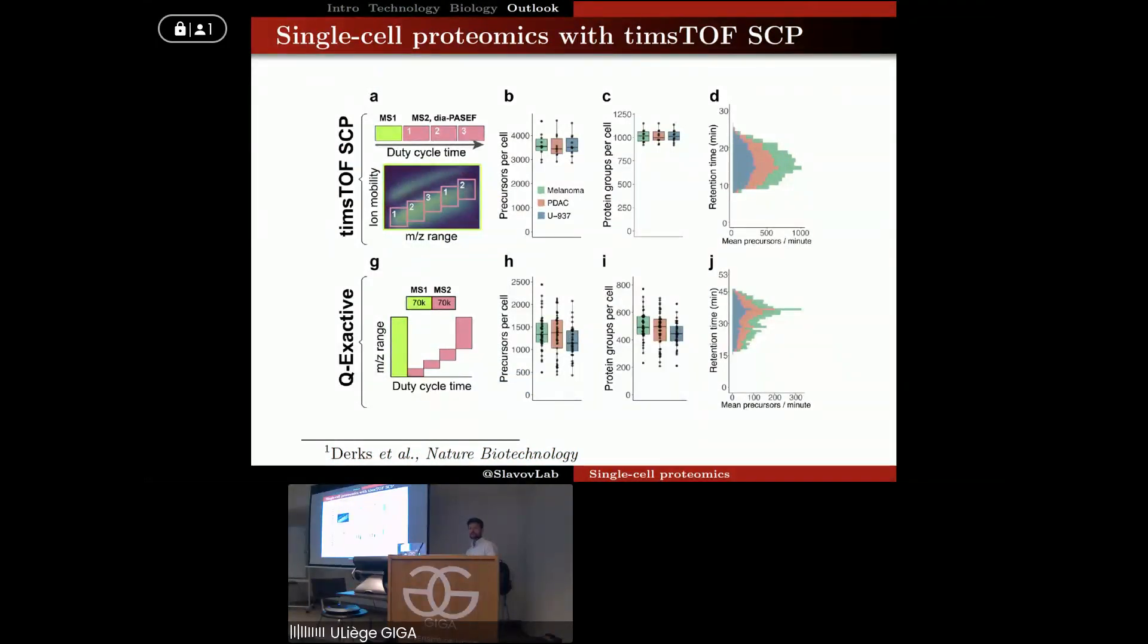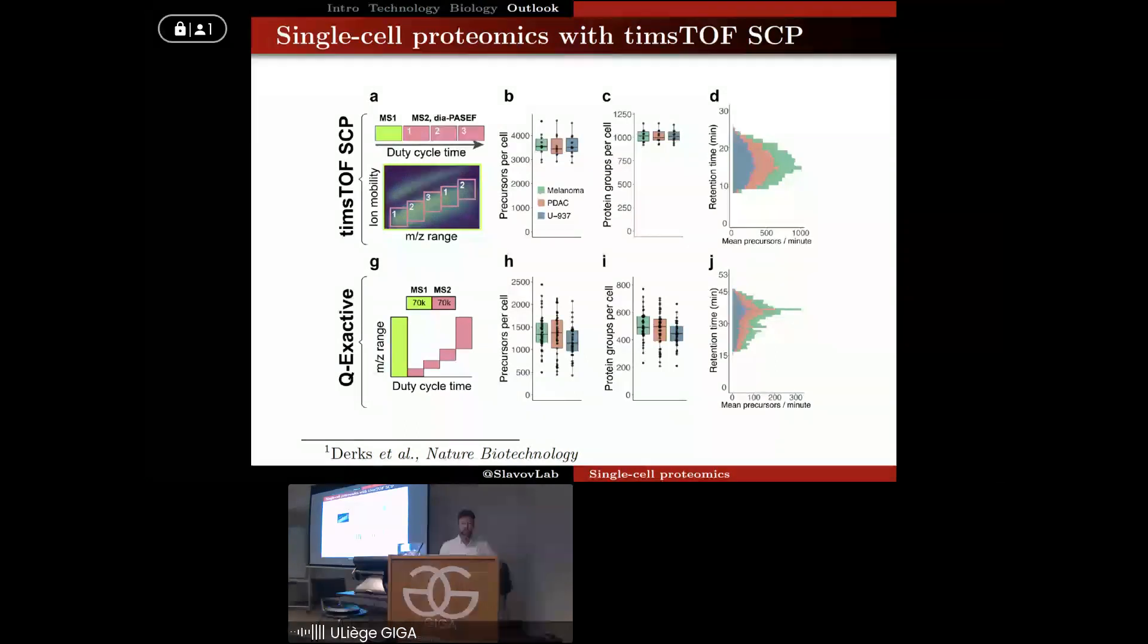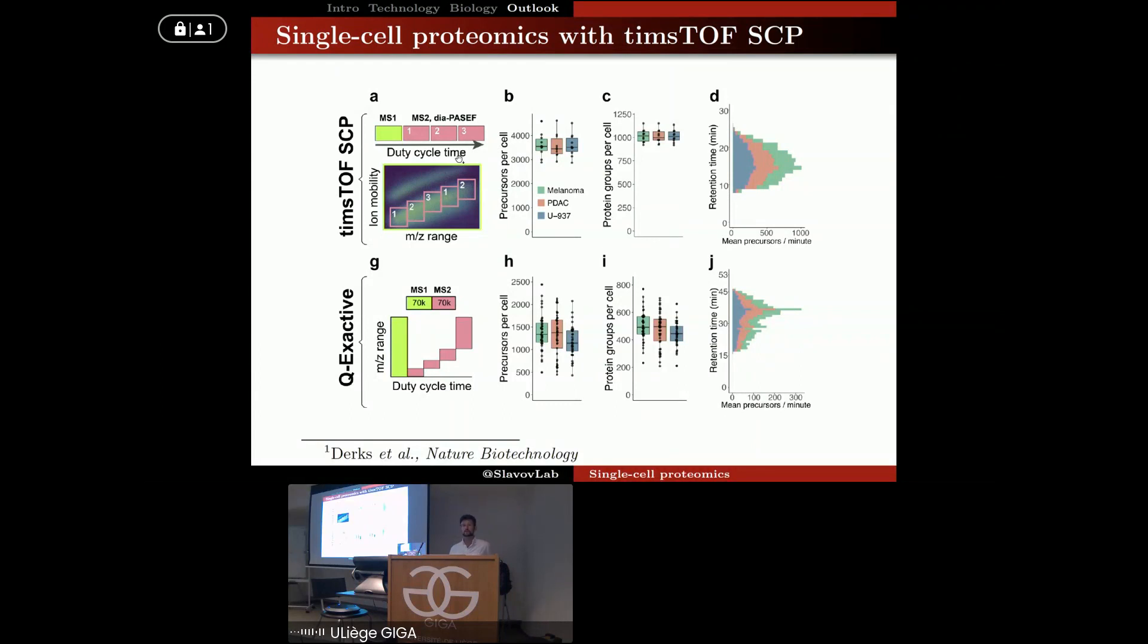And this is actually a good segue to show you some data from the instrument that you're about to acquire. So here on the top are data from the timsTOF SCP system from Bruker. This is a new state-of-the-art instrument which we use with Plex-DIA. And then on the bottom you can see the same samples analyzed with a Q Exactive instrument - it's an Orbitrap instrument, older instrument, quite a bit older. And you can see that the new instrument is able to analyze about twice as many peptides and proteins confidently identified using very short gradients. So in this case, because we use the Plex-DIA labeling multiplexing, we can analyze one cell every five minutes.